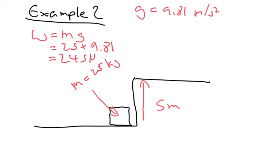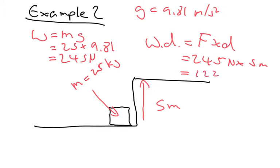So here we've got a force. The work done equals the force times distance. Our force is 245 newtons times 5 meters. We get an answer of 1225 joules.